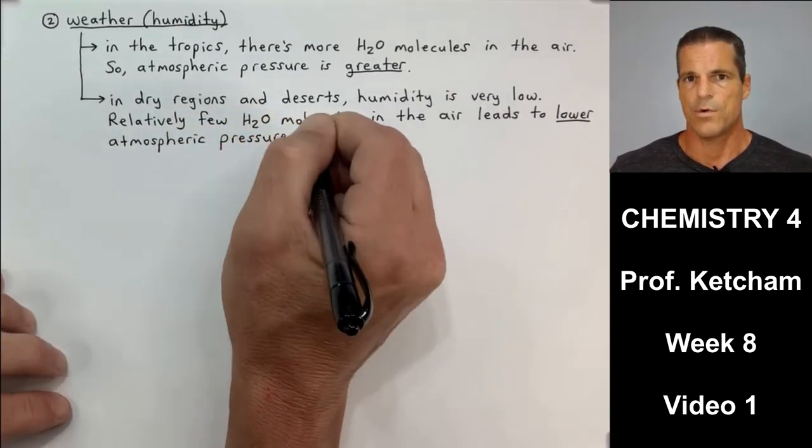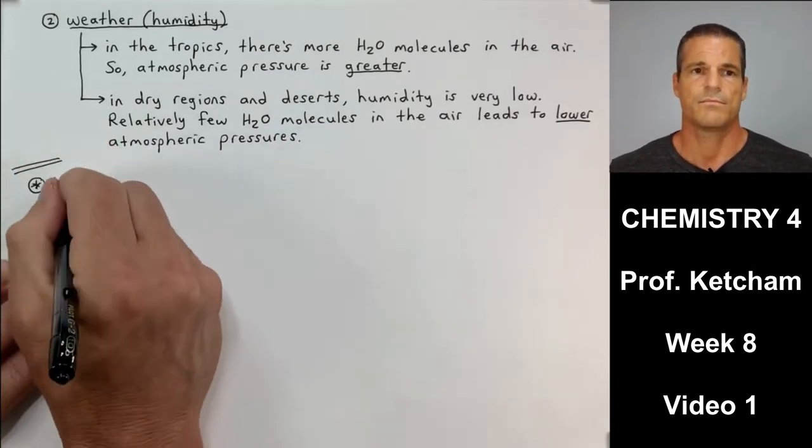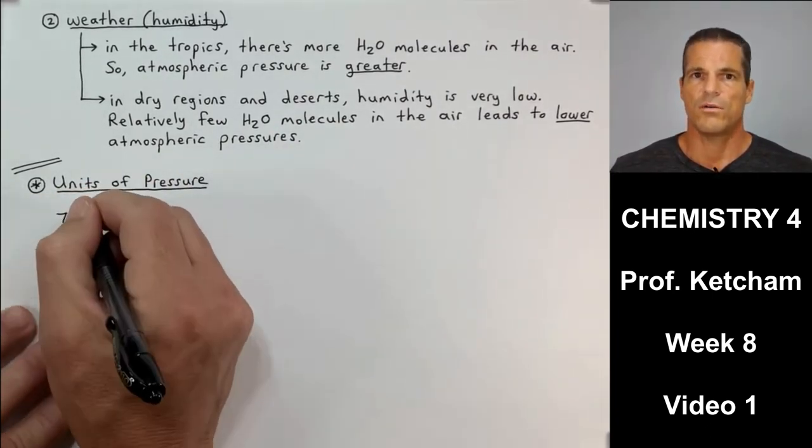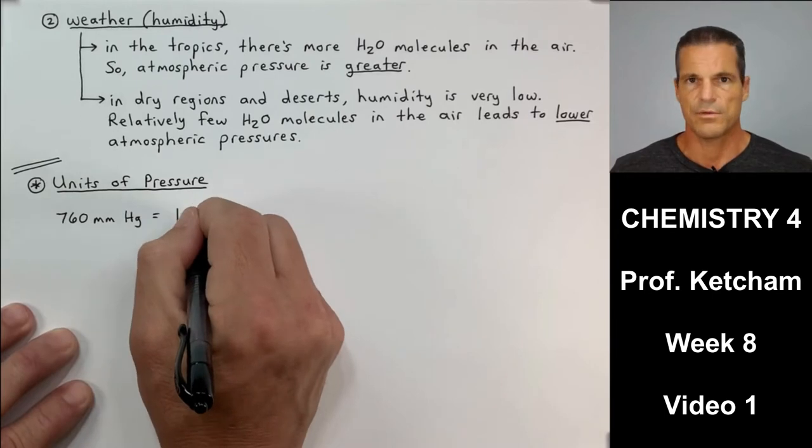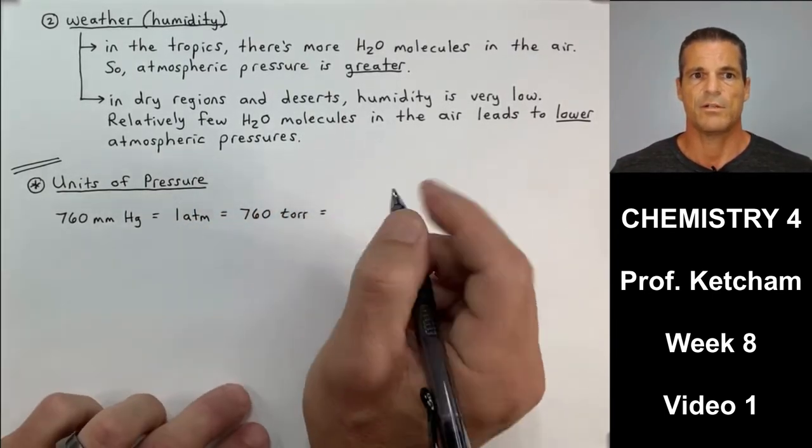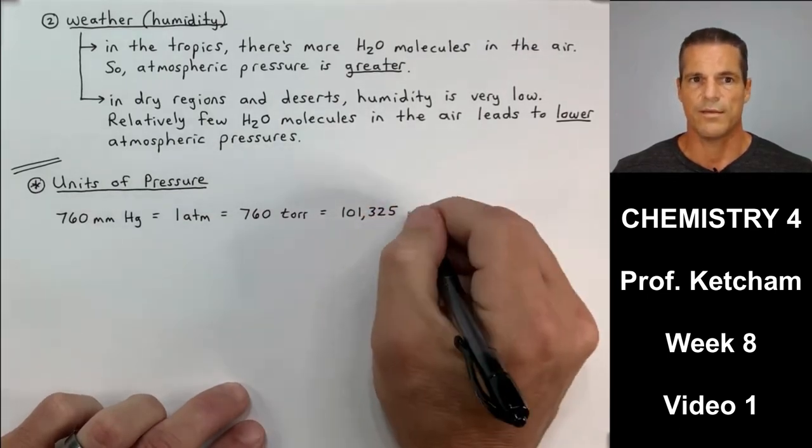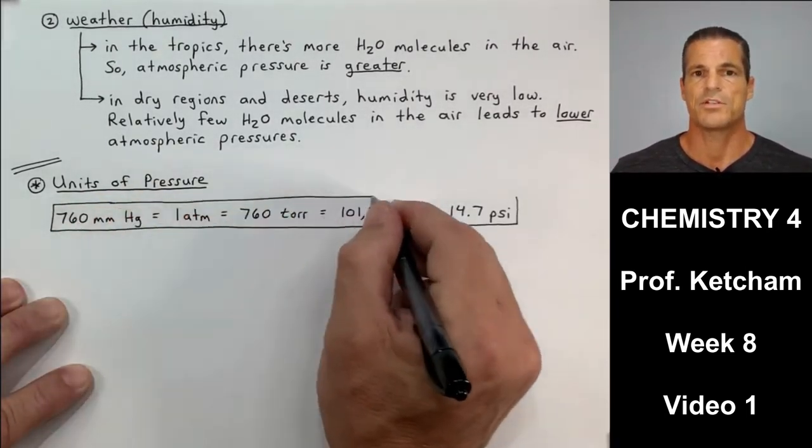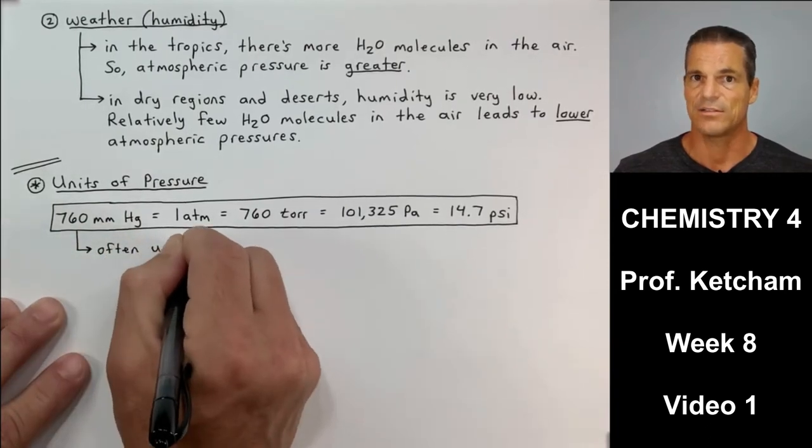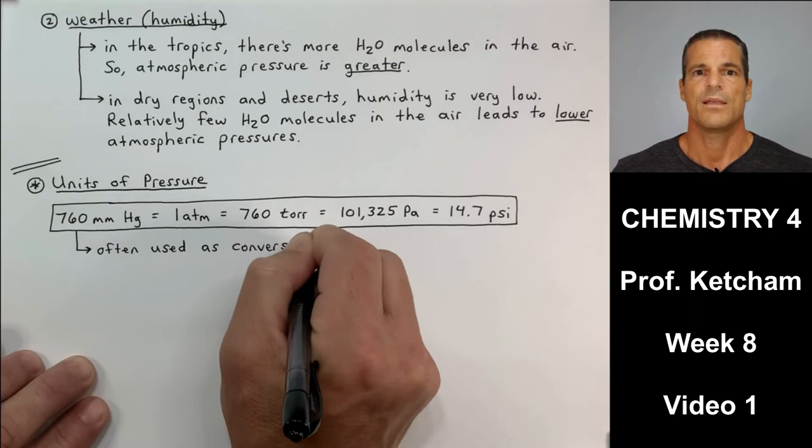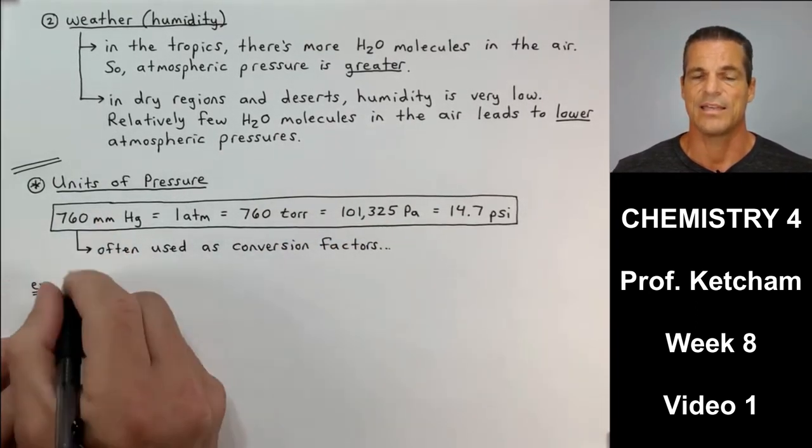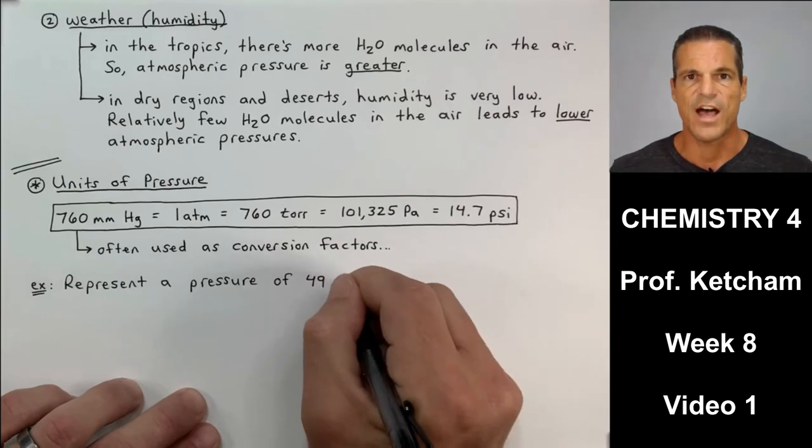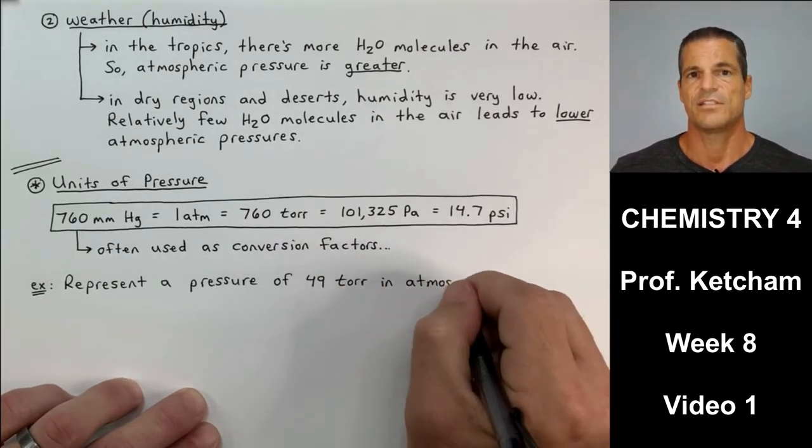So, the very last thing I want to talk about today in this video, in video number one here for section five gases, are units of pressure. Now, here are all the main units of pressure. They're all equal to each other as I've drawn them out right here. 760 millimeters mercury is the same pressure as one atm or one atmosphere, is the same pressure as 760 torr, is the same pressure as 101,325 pascals, and that's also equal to 14.7 psi, where psi is pounds per square inch. Now, any two of these five can be used as conversion factors.